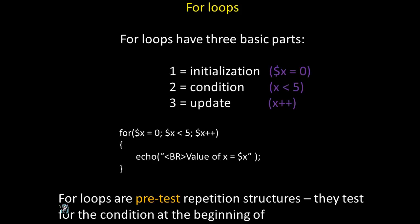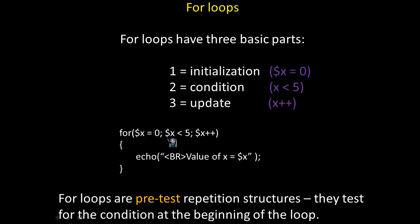For loops have three basic parts. The first is initialization, the second is the condition, and the third is the update. For example, in the following code, the initialization is within the parentheses after the for keyword — that is where the variable x is assigned an initial value of zero. The condition is in the middle between the two semicolons, and in this case it is as long as x is less than five. If that's true, the for loop will continue to iterate. The last part is the update, the action performed at the end of each iteration — in this case, x will receive a postfix increment.